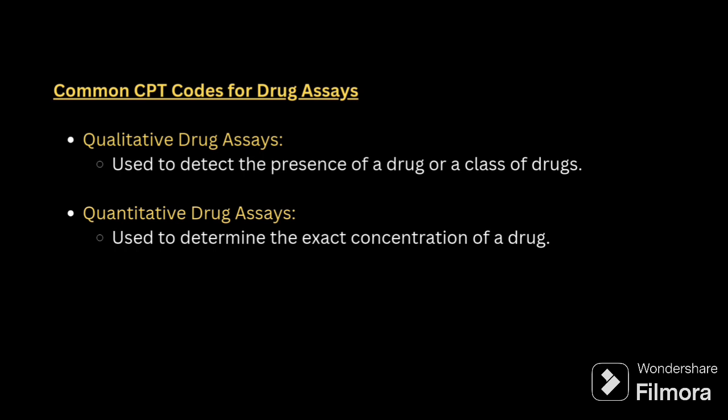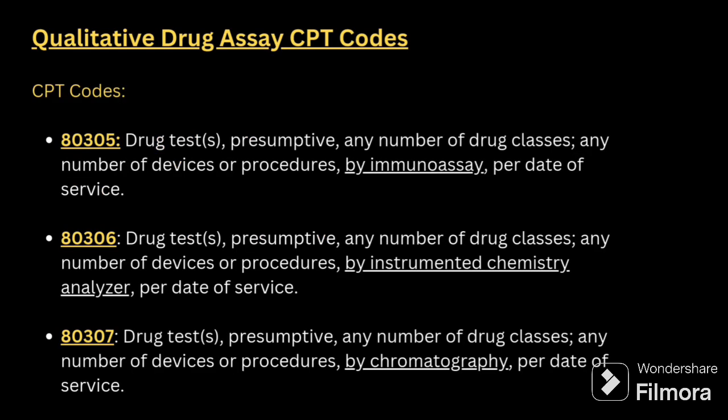Common CPT codes for drug assays: first is qualitative drug assay, which tells you whether the drug is present or not. Quantitative determines, if it is present, the exact concentration of the drug. For qualitative, we have nearly three CPT codes: 80305, 80306, and 80307.